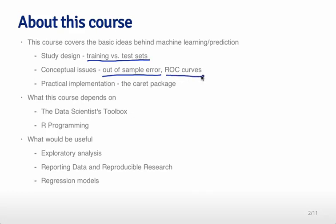We'll also talk about things like ROC curves — methods for evaluating predictors and deciding whether a predictor is any good. We're going to focus a lot on the practical implementation of these machine learning algorithms in R, and we're going to be using the caret package for a large majority of that. The caret package is a nice unifying framework for a lot of machine learning packages that exist in R, which were built by many different people with different parameters and choices.